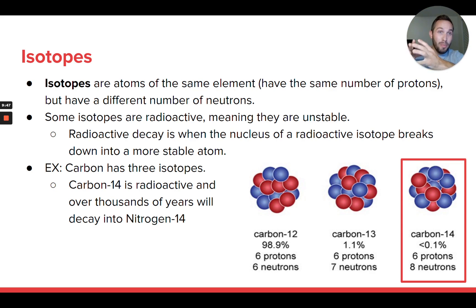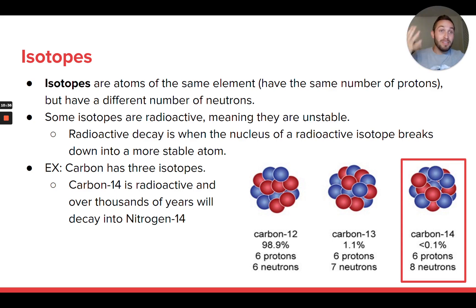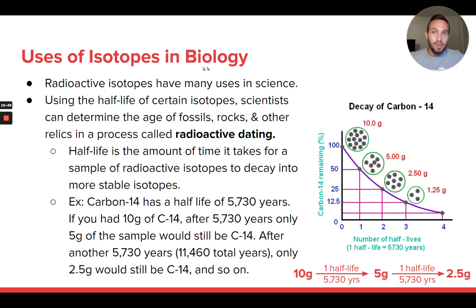A radioactive isotope will at some point in the future change — sometimes losing protons or neutrons, and sometimes even changing what element it is. Carbon-14 is actually radioactive. If you have a carbon-14 atom, at some point in the future it's not going to stay carbon-14 — it actually becomes nitrogen because one of its neutrons becomes a proton, changing the composition of that atom. It takes on average thousands of years for carbon-14 to change, but it will — it's not stable.